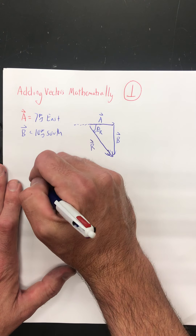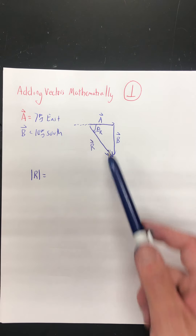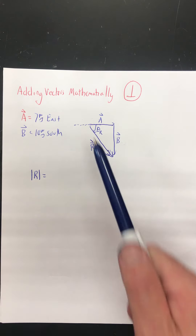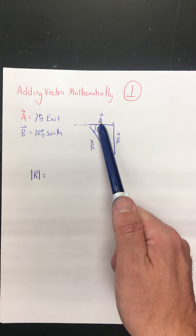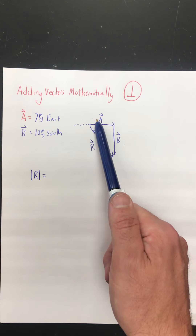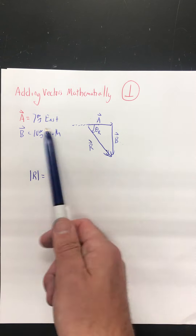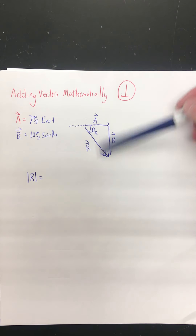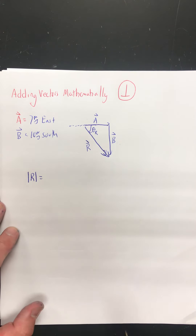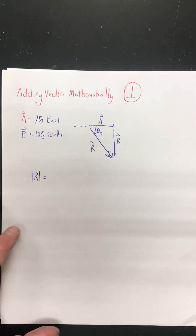What I'm looking for is the magnitude of vector R. What I don't want to do is add vectors A and B by just saying 7 meters per second plus 10 meters per second, because that makes no sense — these are not the same type of quantity. That would be like adding balloons to nickels or bananas to strawberries. Things that go horizontally add to things that go horizontally, and things that go vertically add to things that go vertically. Since this is a right triangle, we're headed toward the Pythagorean theorem, but let's do this more formally.